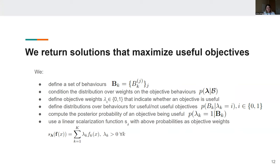We define distributions over behaviors for useful and non-useful objectives, and these are designed to represent practitioners' expectations about what a useful objective should behave like in terms of behaviors that we've defined. We then use these distributions to compute the posterior probability of an objective being useful given its behaviors.